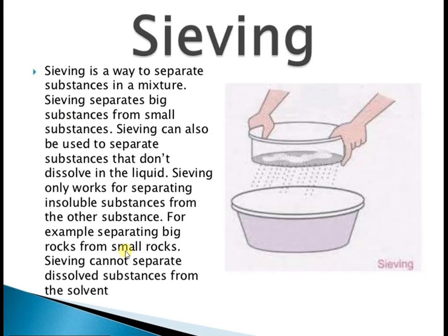Children, what is sieving? Sieving is a way to separate substances in a mixture. Sieving separates big substances from small substances. Sieving can also be used to separate substances that do not dissolve in a liquid. Sieving only works for separating insoluble substances from another substance — for example, separating big rocks from small rocks. Sieving cannot separate dissolved substances from the solvent.